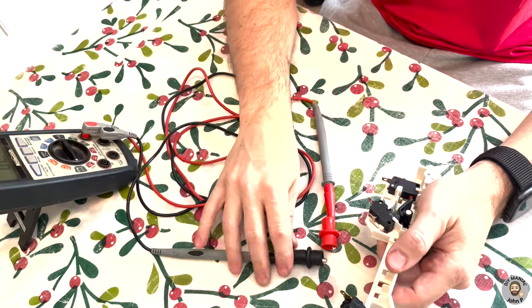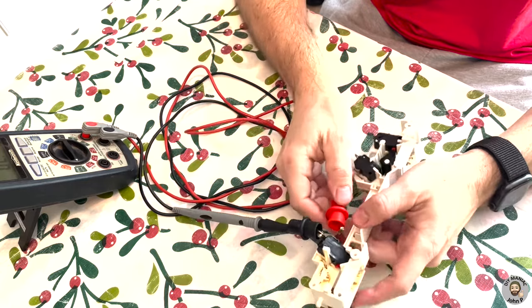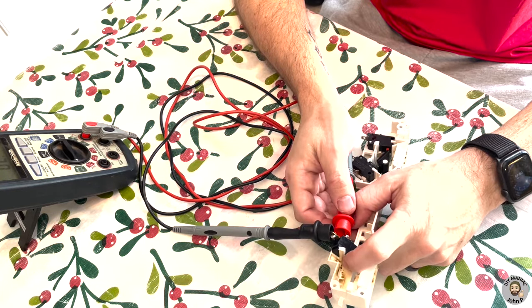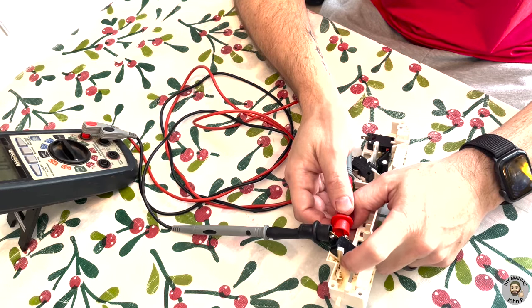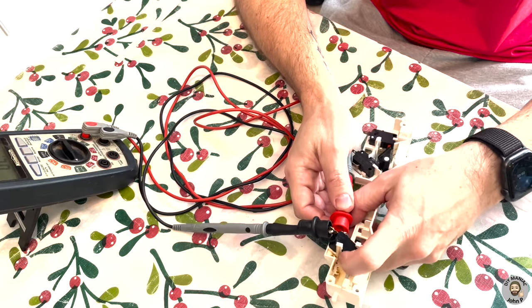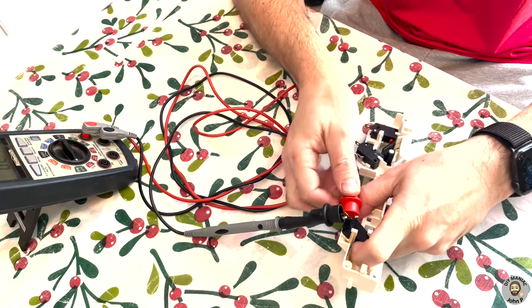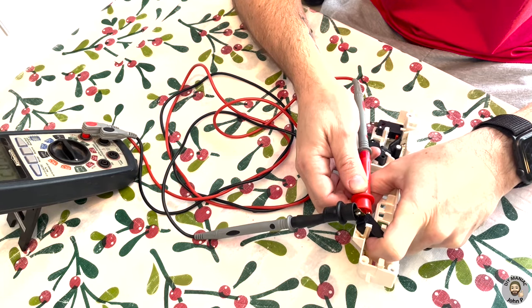So with our multimeter, we're going to put on continuity. We can take our alligator clips on each lead, and we can test the switch. In this case, this is an always open. So right now, we're not getting any continuity because the button's not pushed. And once we push the button, we get our continuity flowing through as such.